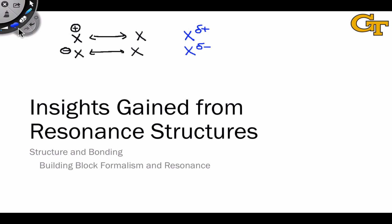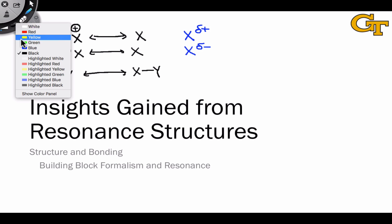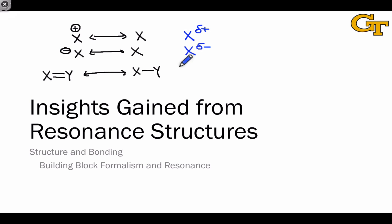Finally, it's also worth pointing out that we can draw conclusions about bond orders from resonance structures. For example, if a pair of atoms has a double bond between them in one resonance structure but only a single bond in another, we can say about the true structure that there is a partial double bond between x and y such that the bond order is somewhere between 1 and 2, and we represent that using a partial double bond symbol in the resonance hybrid.